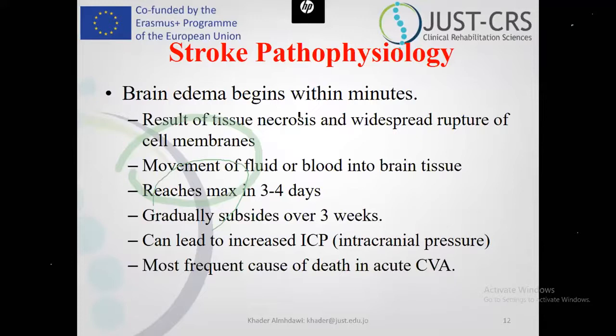In this period, this is critical. The stroke survivor tries to operate the affected arm and fails repeatedly. The subconscious links the affected arm with pain and failure, suppressing future attempts to use the arm. This is called learned non-use — the patient learns not to use the arm because it's connected with failure and pain. However, after one month, the arm will improve. This is a very important point to consider.